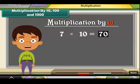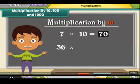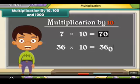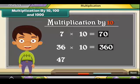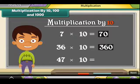By the same logic, 36 multiplied by 10 is 360, and 47 multiplied by 10 is 470.